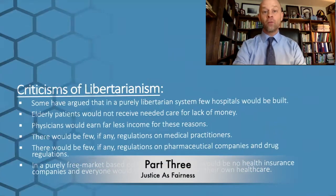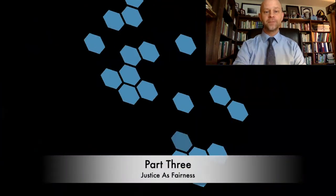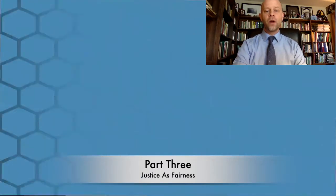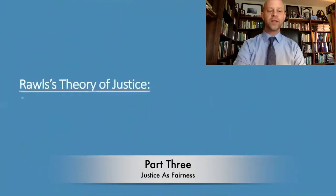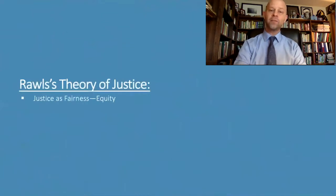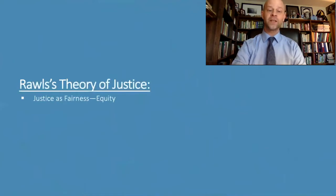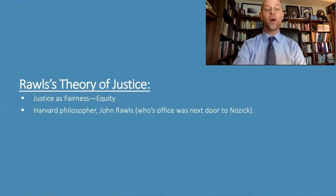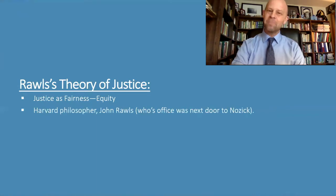We're going to move on to a Rawlsian theory of justice. According to John Rawls, his theory of justice was one of fairness or equity. Equality is important, but sometimes in order to do what's fairest, there needs to be unequal redistribution of certain benefits or goods in a society. Rawls was a Harvard philosopher, and interestingly, his office was right next door to Robert Nozick, so you can imagine the interesting conversations they were having about this issue.